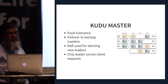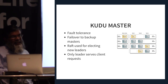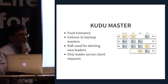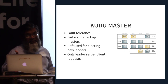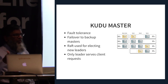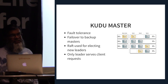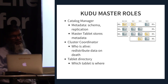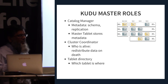The master has fault tolerance — you can have multiple masters, but the other masters don't respond to client requests; they're there as backups in case the leader master fails. If the leader fails, they elect a new leader to serve client requests. Followers replicate whatever updates the leader makes to its metadata. Raft is the protocol used both for electing leaders and for maintaining consistency.